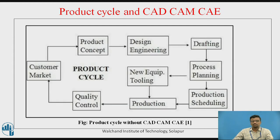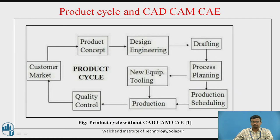There are different components in the case of a product cycle without CAD/CAM/CE: customer and market, product concept, design and engineering, drafting which will be manual drafting, process planning, and if there is a requirement for new equipment, tooling, or machine tools, then production and scheduling, production and quality control. These are the components present in the product cycle.